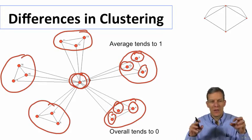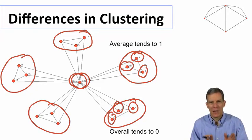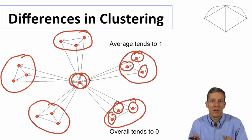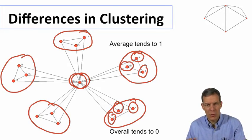What you're measuring, whether you're doing it node by node or whether you're doing it overall by looking at possible triangles and then asking whether they're completed, you can get different answers. And so they measure different things and it's important to sort of keep that straight.